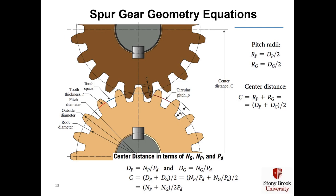The center distance — from the center of the first gear to the center of the second — equals the diameter of the pinion plus the diameter of the gear divided by two. And we show that the center distance also equals the number of teeth in the pinion and the gear divided by two times the diametral pitch.